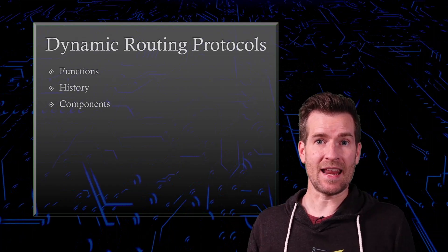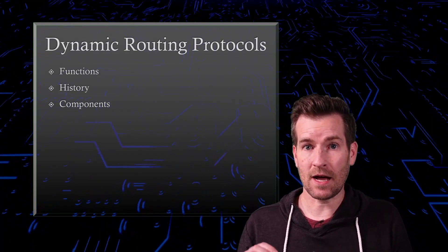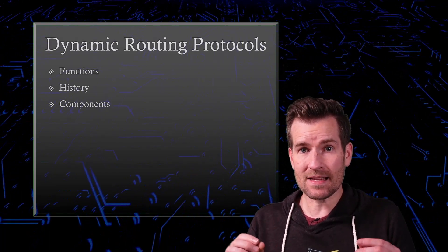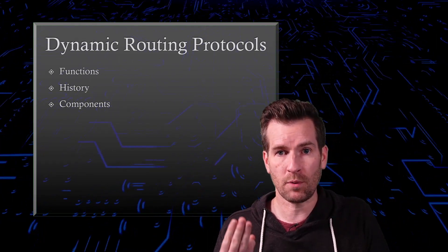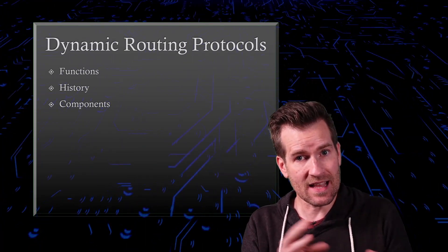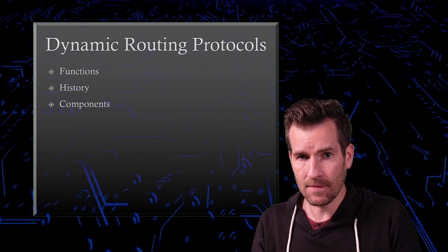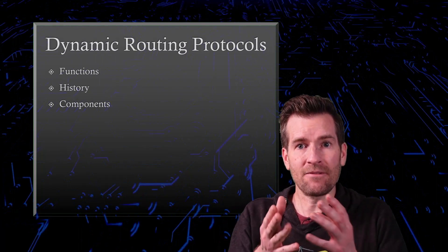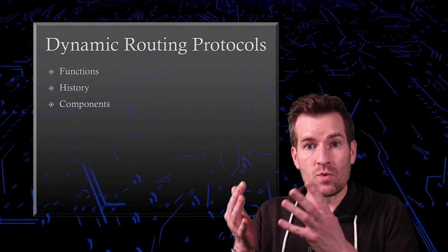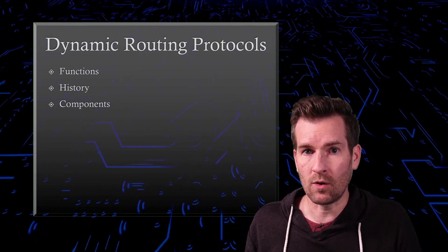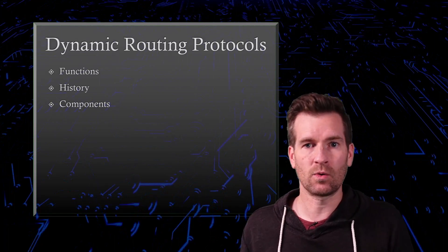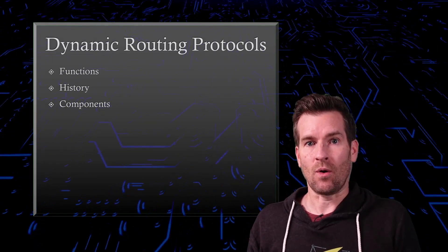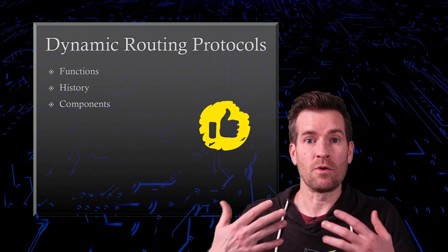In this video, we talked about dynamic routing protocols. We started out by talking about some functions that the dynamic routing protocol has, a little bit about the history, and then we wrapped things up talking about the three components a dynamic routing protocol has — the messages that are sent back and forth, how it stores data in databases and tables, and finally how it calculates the best path using an algorithm. Those are the three components: the data set, the messages, and the algorithm that these different protocols use to determine the best path. We're going to start using that information now as we move forward in future videos.